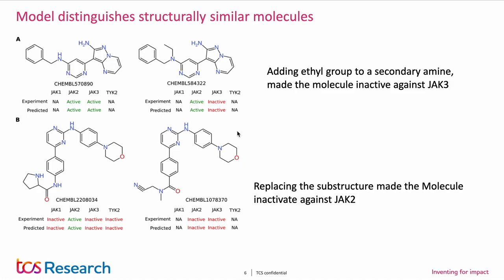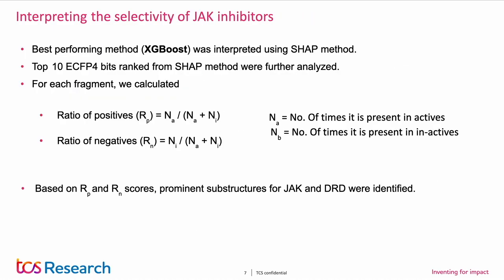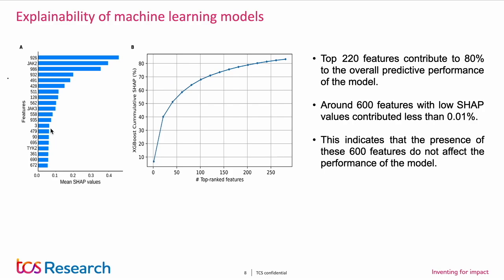The next step in the pipeline after building these models was to interpret them using the SHAP method to see which substructure the model was looking at while making predictions. The left-hand side figure shows the distribution of mean SHAP values for the top 20 ECFP4 bits of JAK inhibitors, and the right-hand side shows the cumulative SHAP percentage for top-ranked features. From this analysis, we found that 220 features were contributing 80% to the overall predictive performance, while around 600 features contributed less than 0.01%, meaning their presence does not affect model performance.